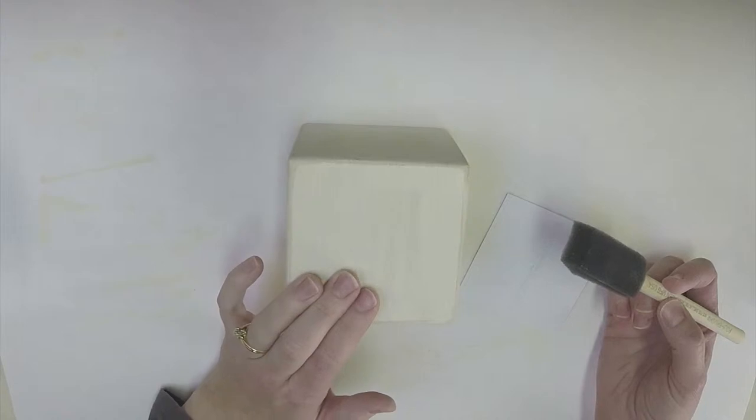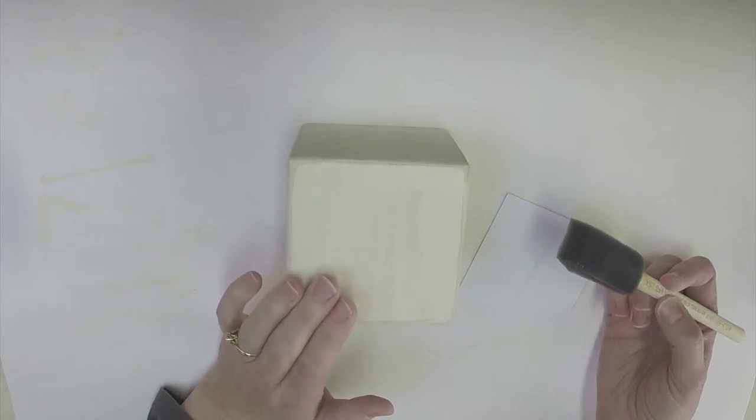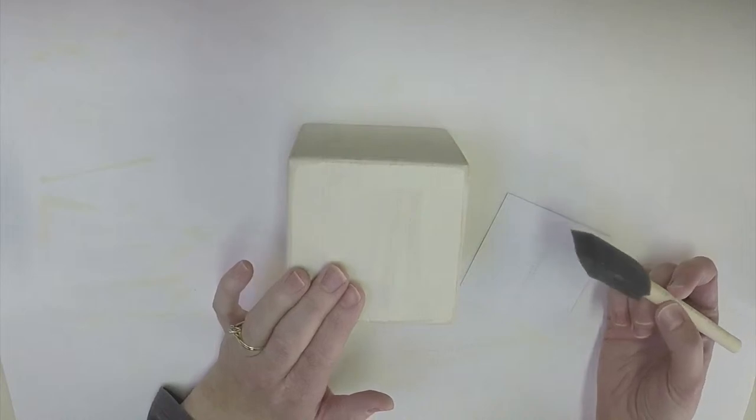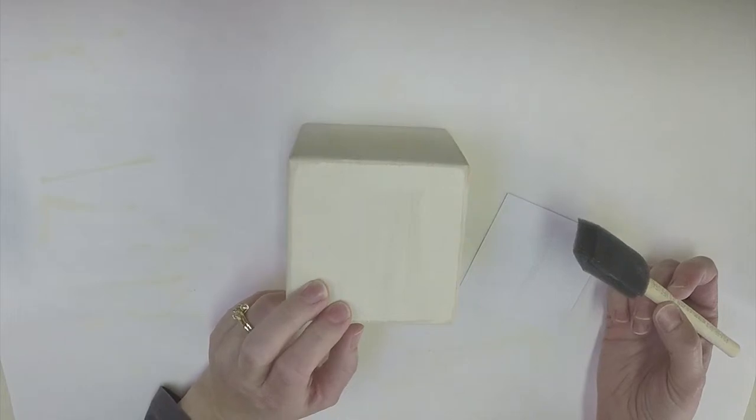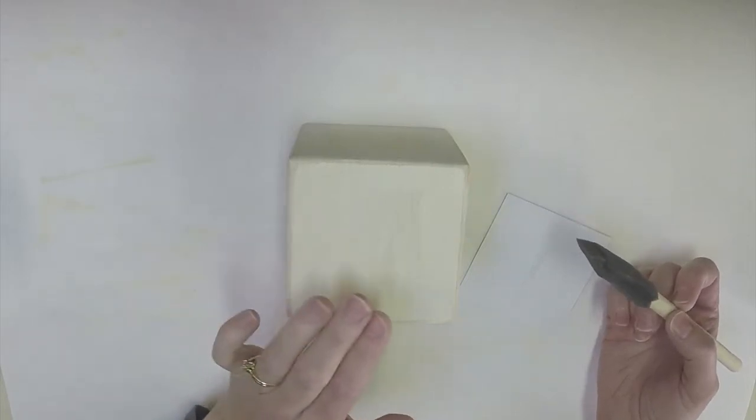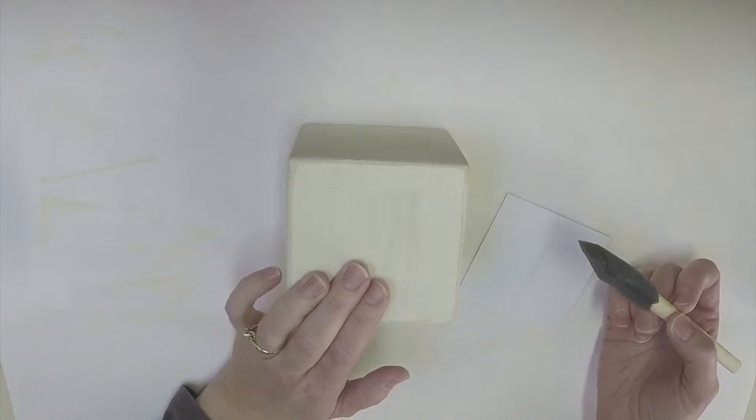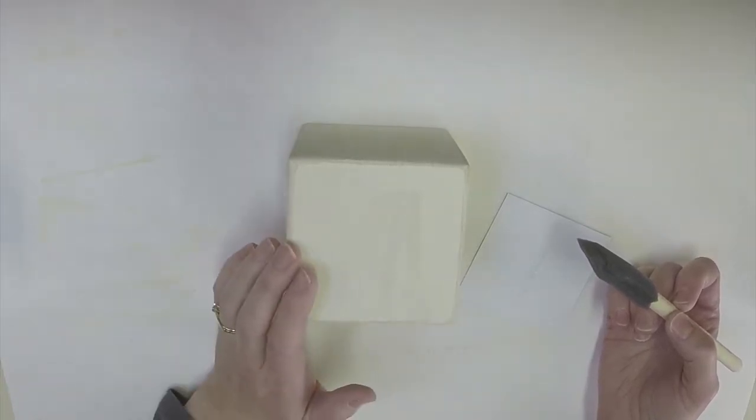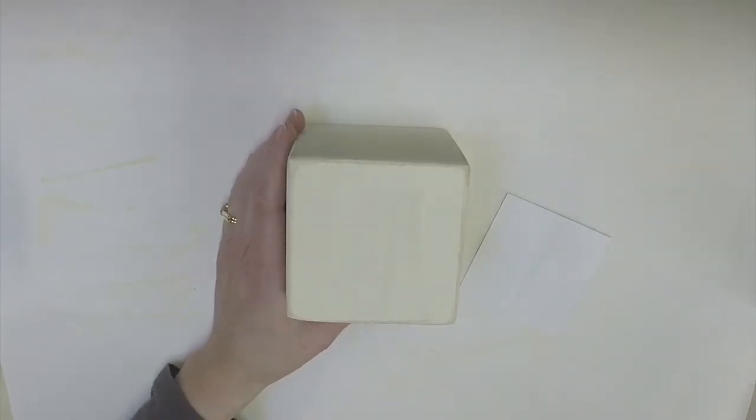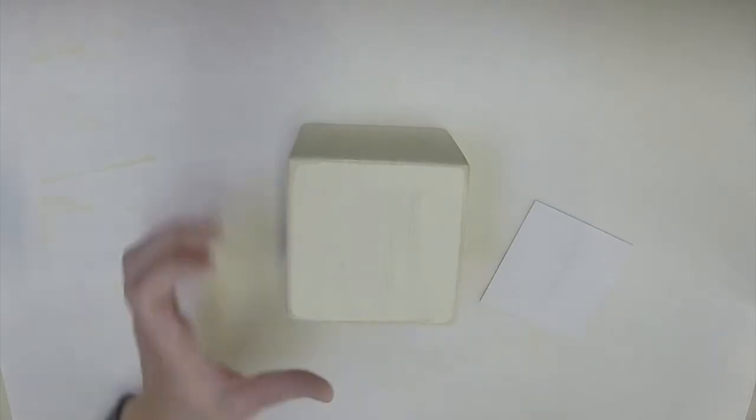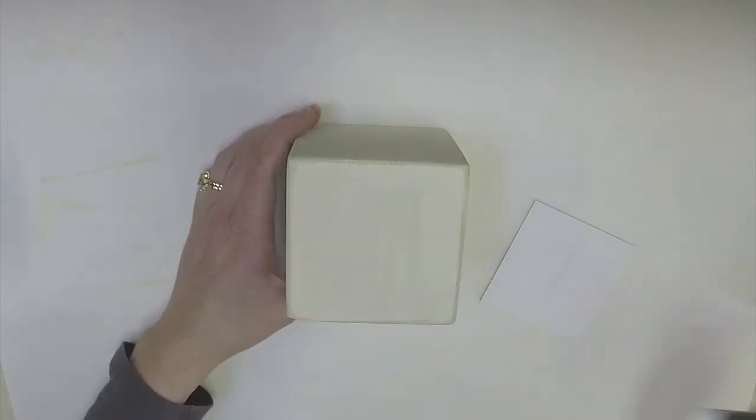Now one thing that you want to make sure of when working with Mod Podge is that you apply enough because Mod Podge dries very quickly so you want not a really thin coat because it dries really fast but you don't want a really thick coat either or it's going to cause some bubbling and dripping. So just paint on and you have to work kind of quickly because it dries so fast.